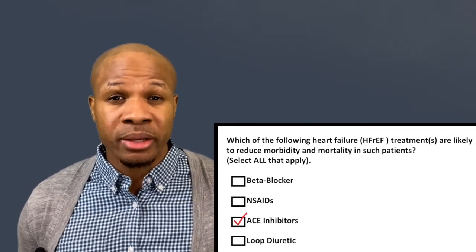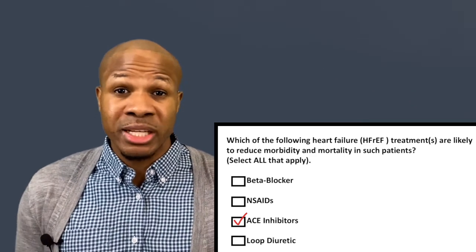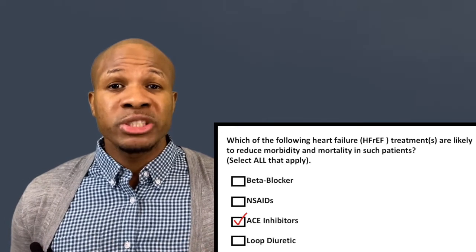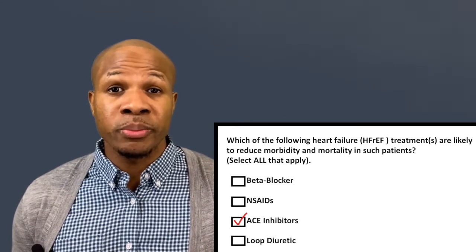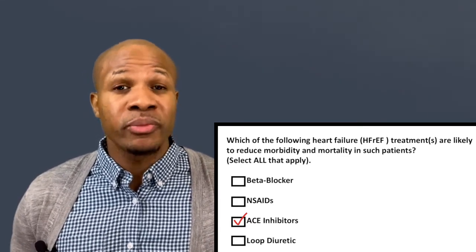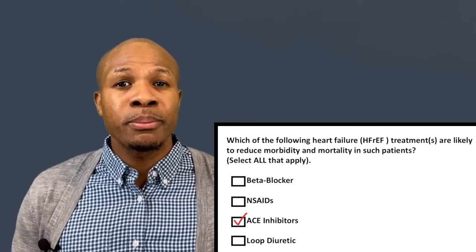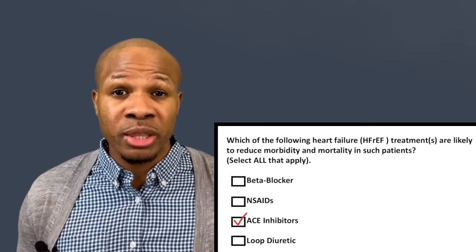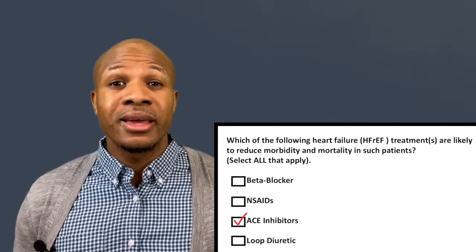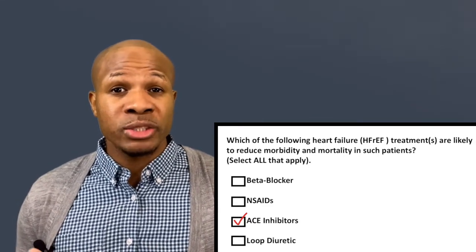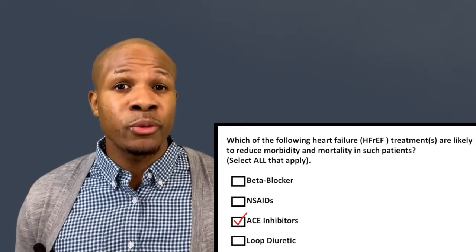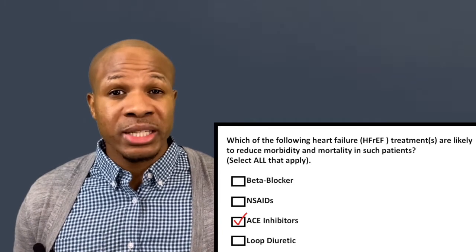The correct answer is ACE inhibitors, not loop diuretics. Both decrease blood pressure, but loop diuretics do so by simply eliminating volume from the arteries — lowering pressure by reducing fluid. That only controls symptoms by helping get rid of congestion. ACE inhibitors, on the other hand, decrease cardiac remodeling. As the heart gets weak, it tries to regenerate itself but does so poorly, getting weaker over time.